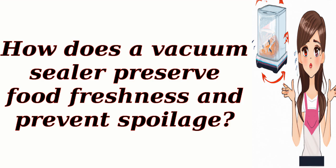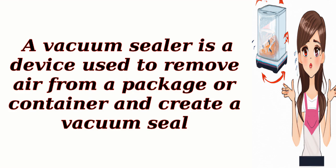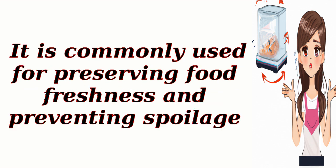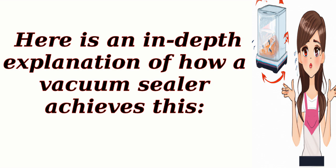How does a vacuum sealer preserve food freshness and prevent spoilage? A vacuum sealer is a device used to remove air from a package or container and create a vacuum seal. It is commonly used for preserving food freshness and preventing spoilage. Here is an in-depth explanation of how a vacuum sealer achieves this.